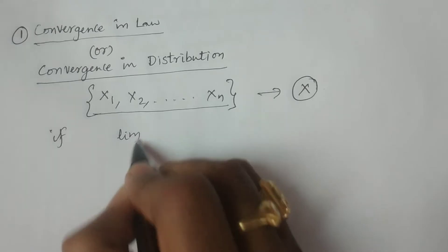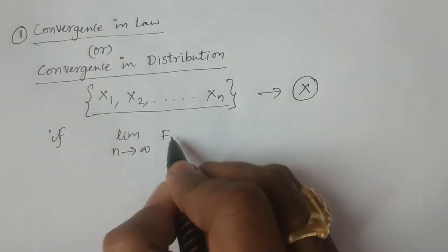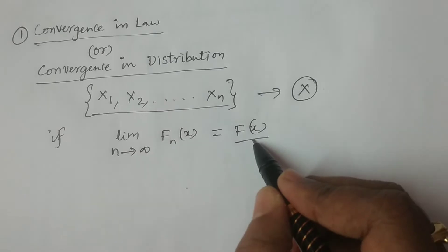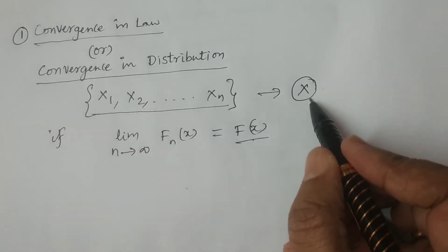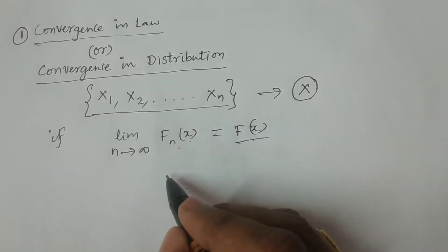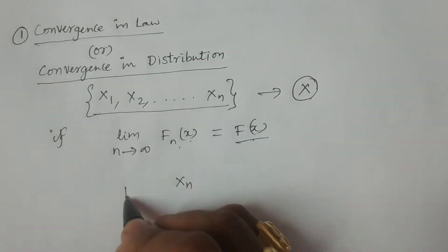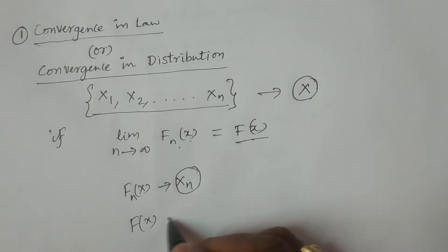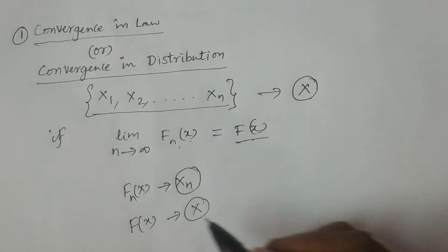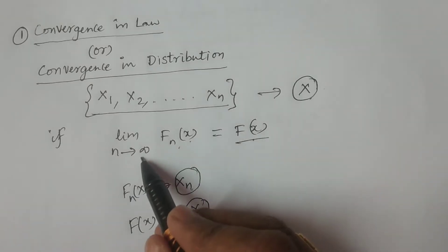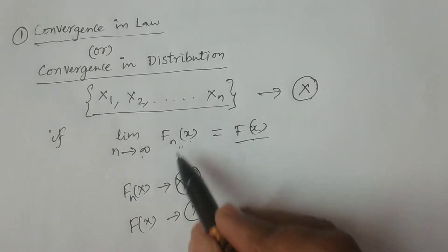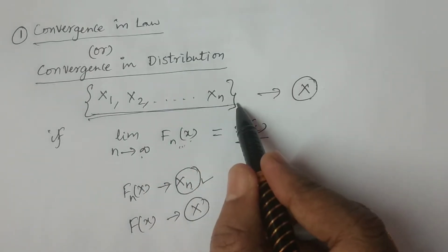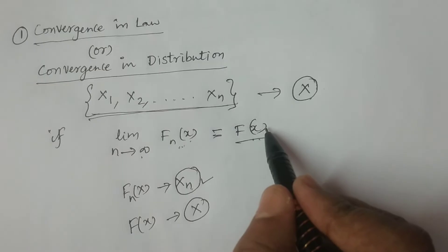That condition is: limit as n tends to infinity of Fn(x) is equal to F(x). What is F(x)? It is the distribution function of the random variable X. What is Fn(x)? It is the distribution function of xn — the nth random variable in the sequence. So as n tends to infinity, Fn(x), the distribution function of xn, becomes equivalent to F(x), the distribution function of X.